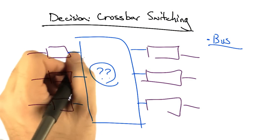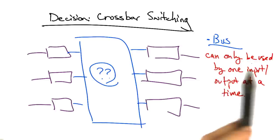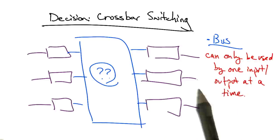Now one possibility is to use a shared bus, but the disadvantage of a bus for the interconnect is that it could only be used by one input output combination in any single time slot.